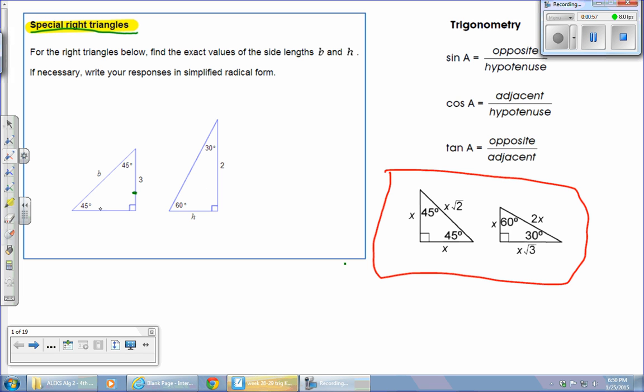So the first one we'll attack is the 45-45-90. I feel like it's a little bit easier, so let's try that. You're going to be looking for this b. We don't know what b is, but we know b is going to be related right here. So b is x√2, because it's the hypotenuse. The side lengths are both the same, this one's 3.